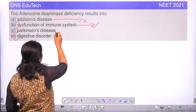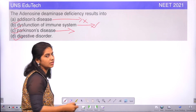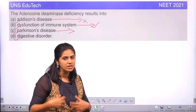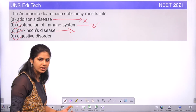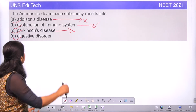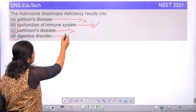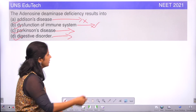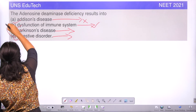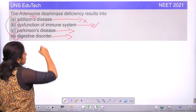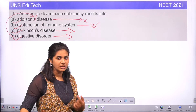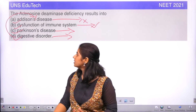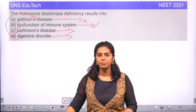The third option, Parkinson's disease, is a nervous system disorder and is not related to adenosine deaminase. The fourth option, digestive disorder, can be related to Addison's disease, because insufficient secretion of steroids from the adrenal gland can cause digestive disorders. So the answer is option B — dysfunction of the immune system.